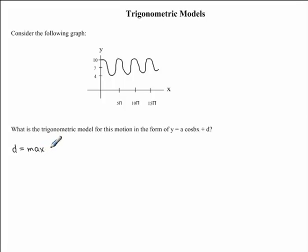So we have the maximum value plus the minimum value, which is all divided by 2. While looking at our graph, you'll notice that the maximum y value occurs at 10. So we have 10 plus our minimum value, which is 4. 10 plus 4 will give us 14. And 14 divided by 2 is equal to 7. So our d variable is equal to 7.